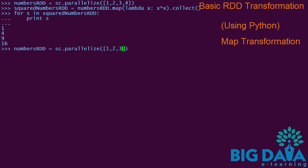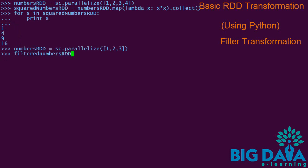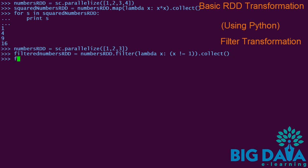Here is the filter transformation using Python. The numbers RDD contains values 1 to 3. A lambda expression to filter out values that are not 1 is passed to the filter transformation. The filtered numbers RDD contains values 2 and 3 as expected.